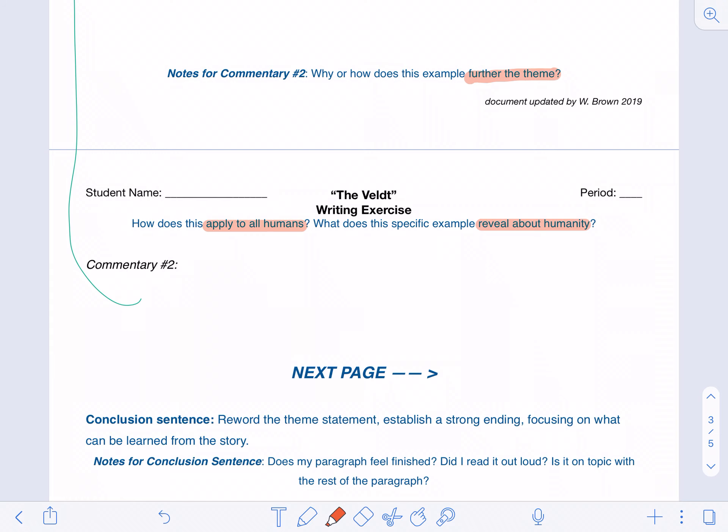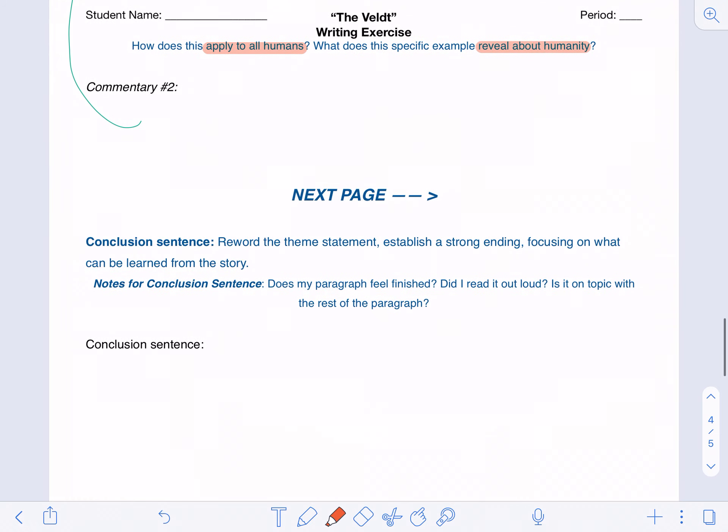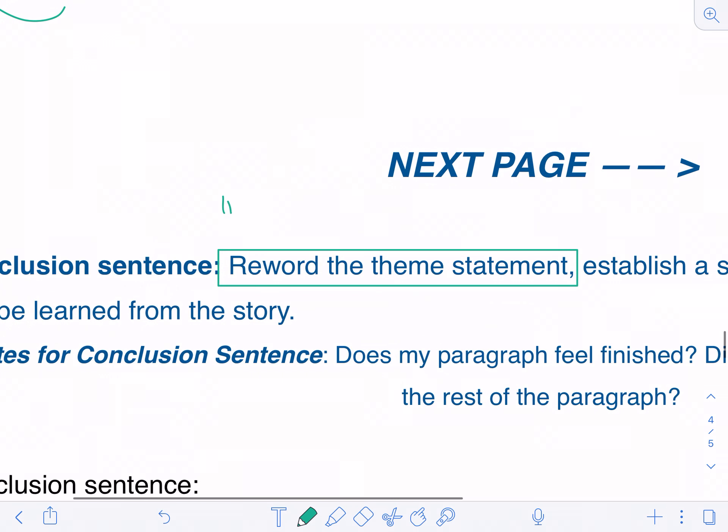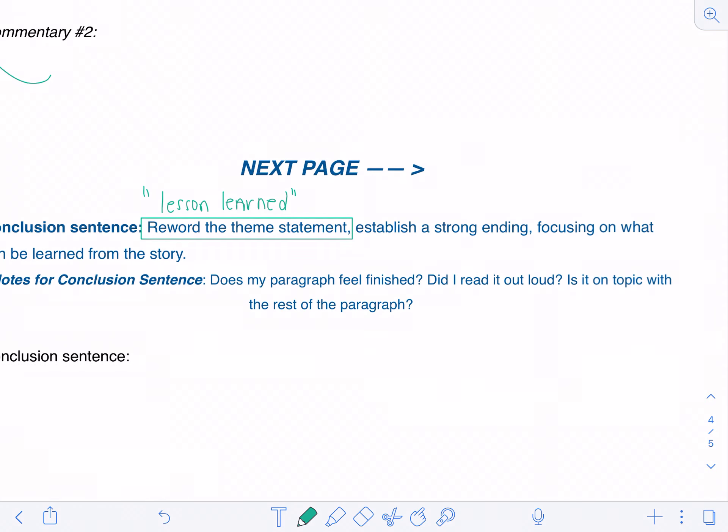And that takes us to our last sentence, which is the conclusion sentence. So you want to reword your theme statement, which is the same thing as your lesson learned. I just like to use them interchangeably because students typically understand it better when I say lesson learned. So you want to reword it in a brand new way.